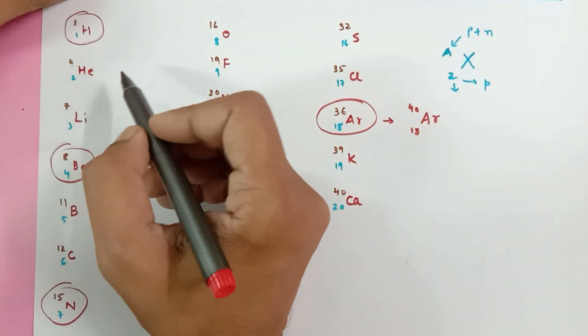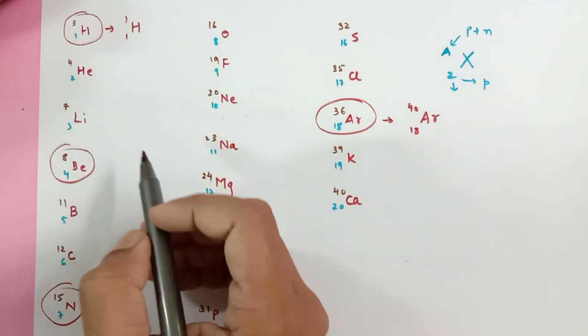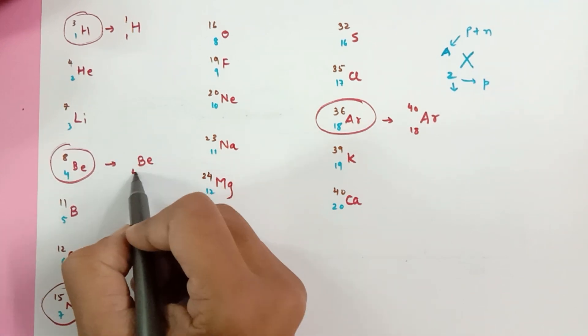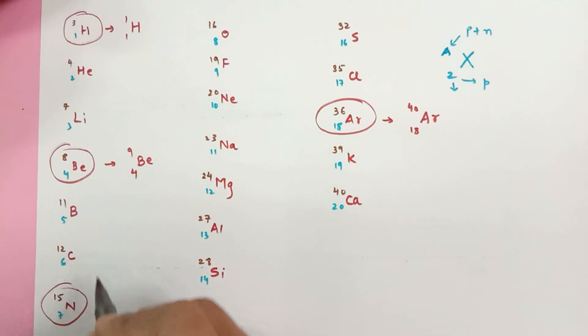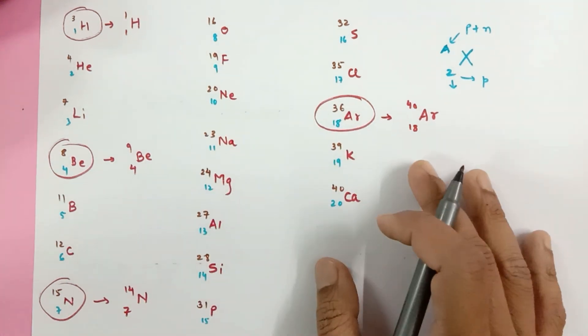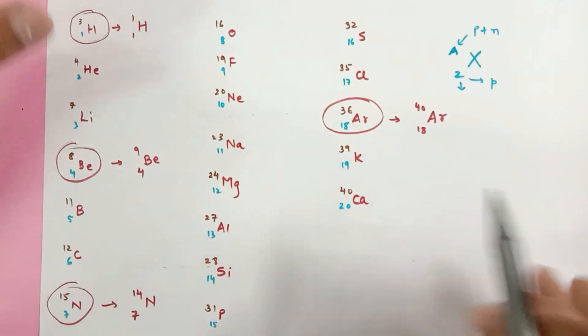Then another exception is hydrogen, that is H 1-1, instead of 3 it is 1. Then over here beryllium is Be 4-9. Then over here it is N 7-14. So just remember, just mug up these 4 and rest all will fall into place.